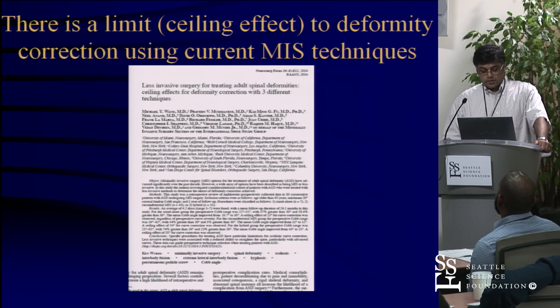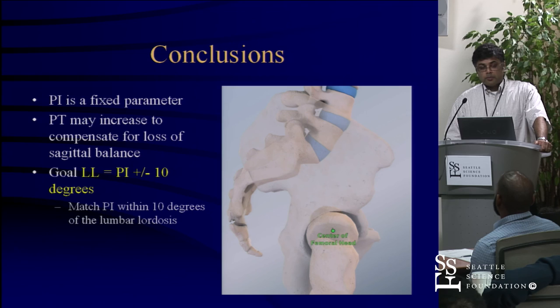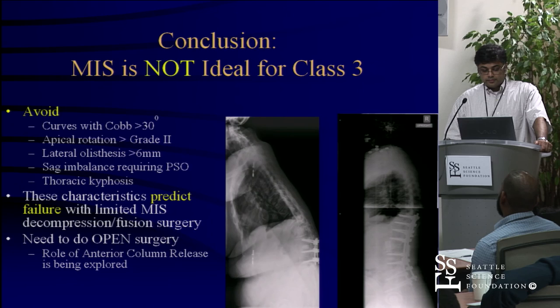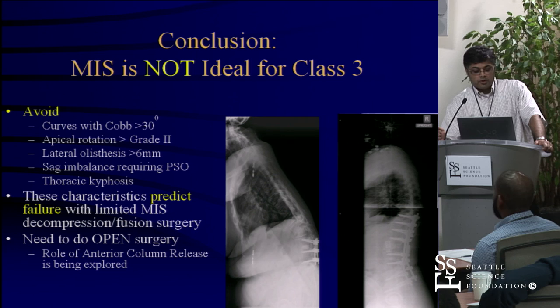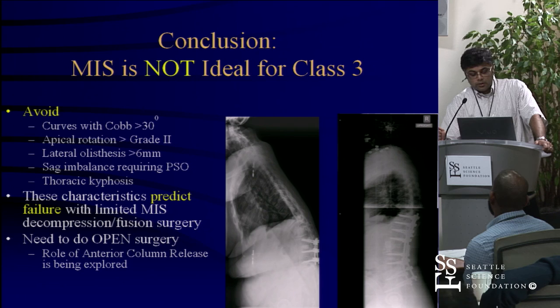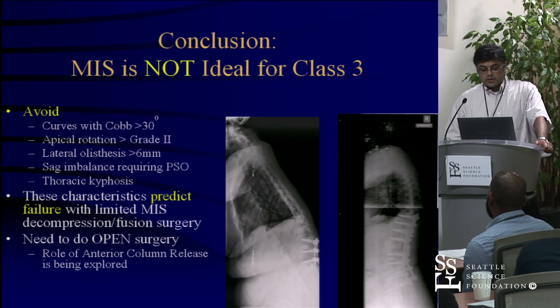These are the kinds of curves you want to avoid treating with MIS surgery: big Cobb curves that are rigid with very high SVAs and a lot of lateral listhesis. This kind of case is probably going to require an open osteotomy — we did a VCR in order to get this patient corrected. Doing small things on this kind of case is not going to be effective. What you're going to end up doing is multiple small things until you end up doing the big definitive surgery anyway.